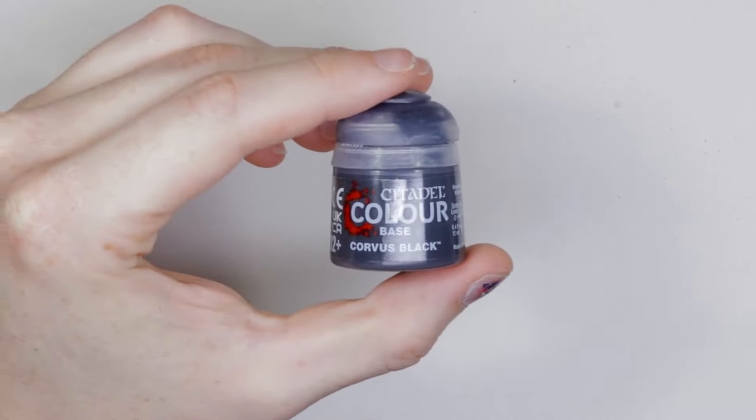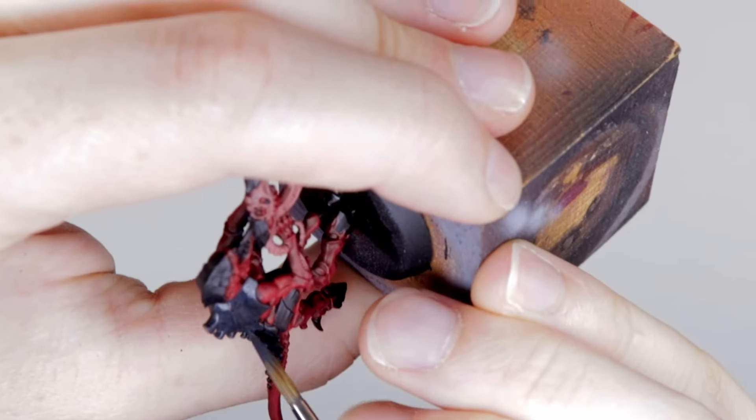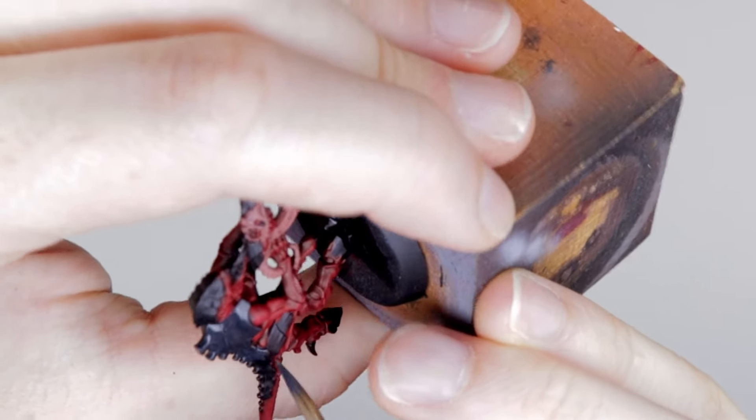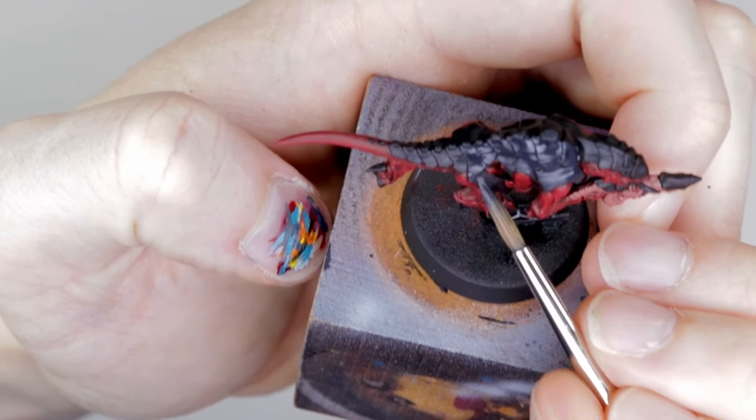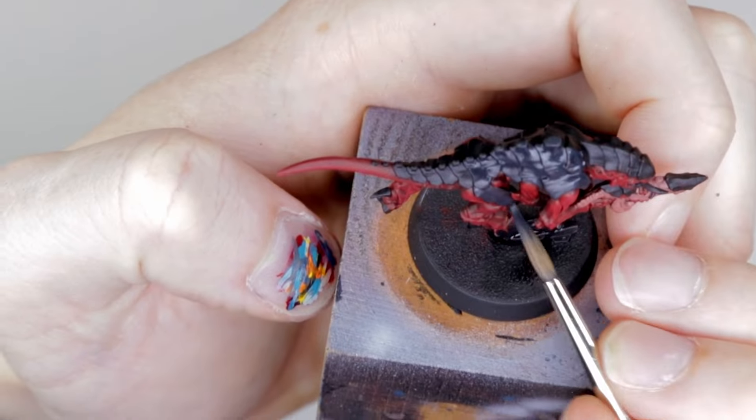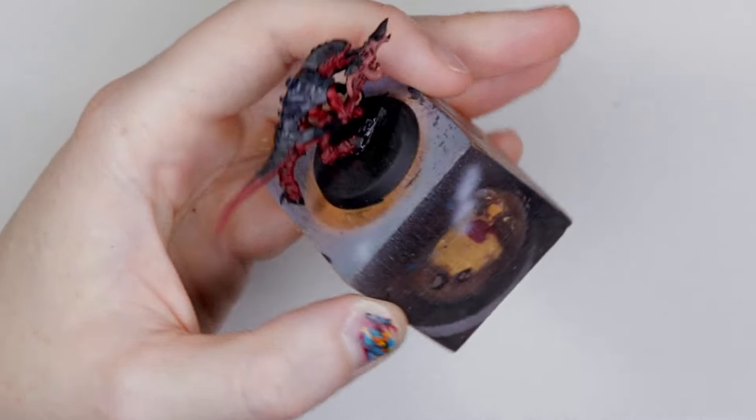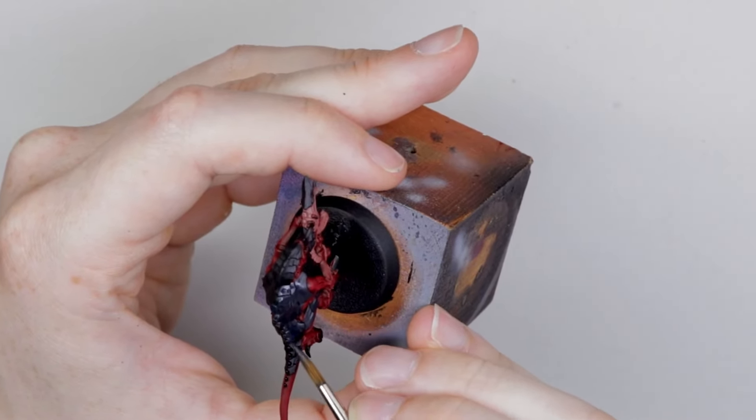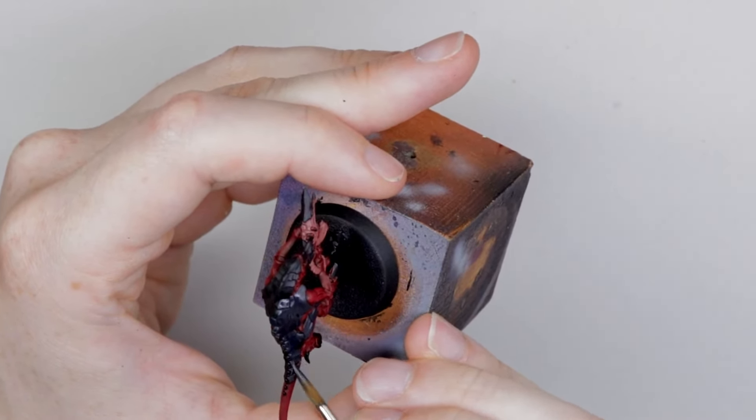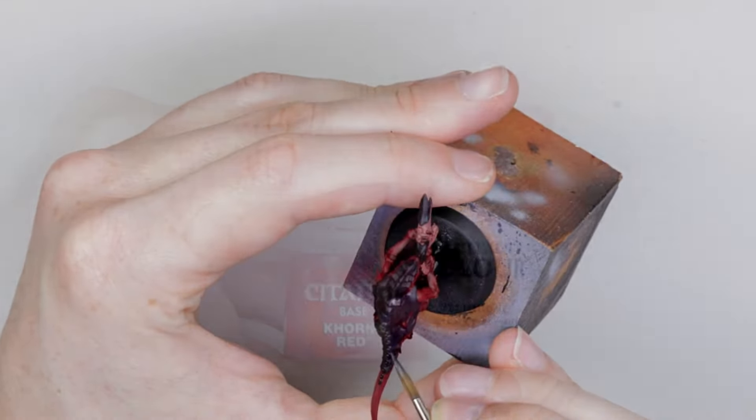Continuing on with the chitin, we're going to pick up Corvus Black base paint. I'm going to paint this onto all of the bone type stuff: the chitin, the hooves, and the talons. We're not going to put this onto the chitin on the gun. We're going to do that a slightly different color, so leave that just black for now. We're going to get a nice solid coat of this, especially onto the chitin.